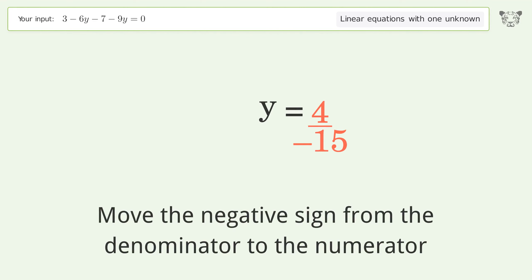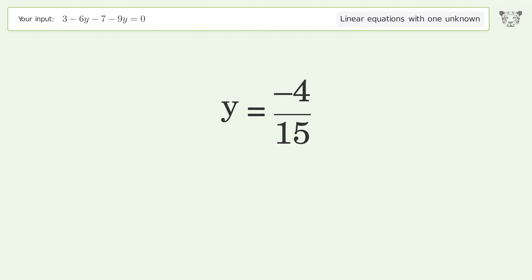Move the negative sign from the denominator to the numerator, and so the final result is y equals negative 4 over 15.